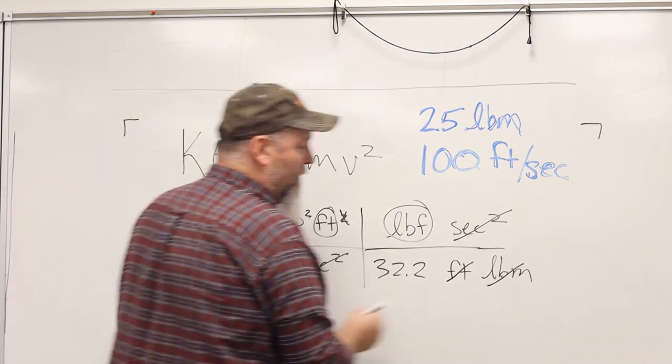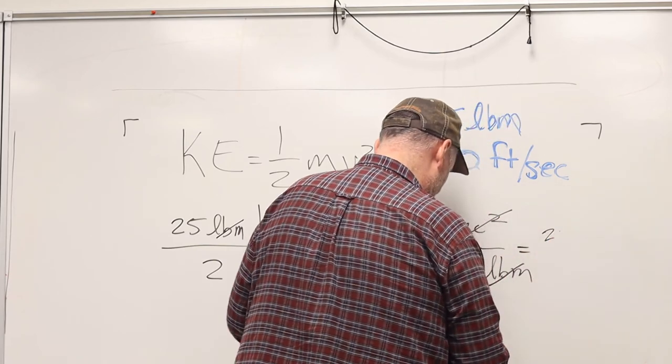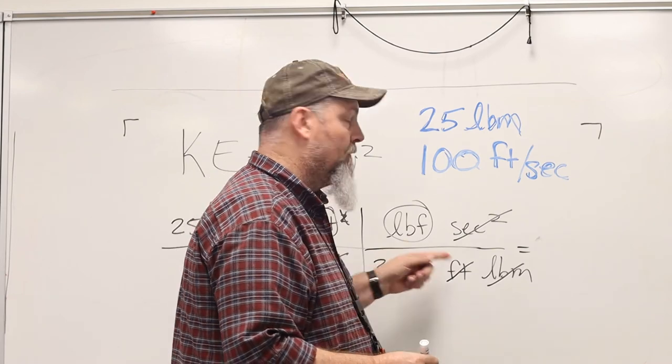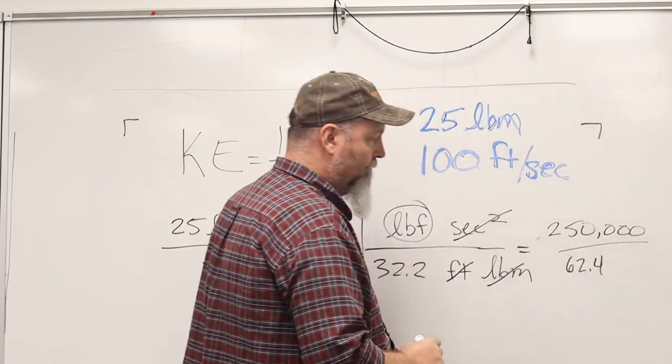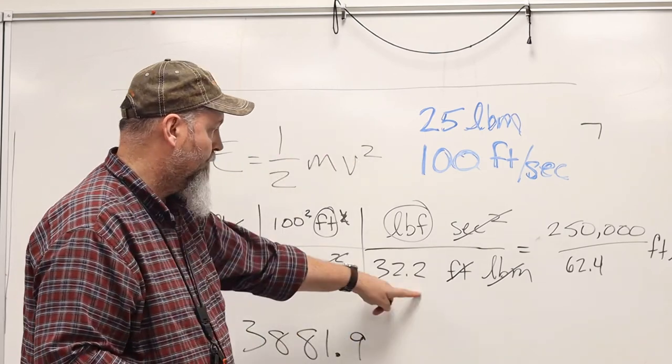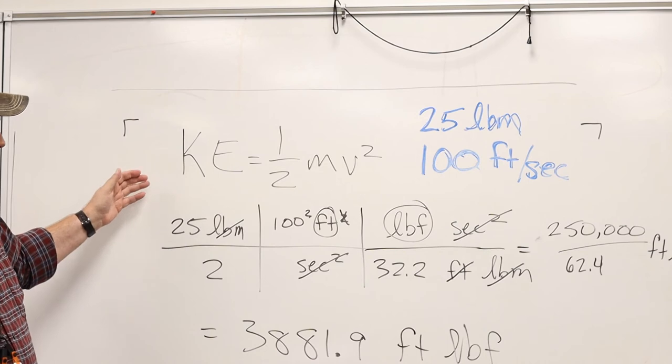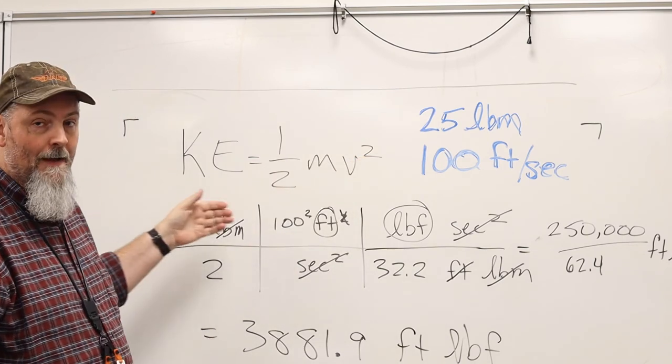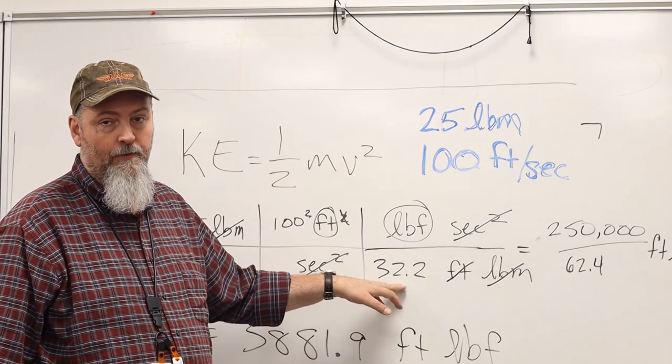And my answer is 3,881.9 foot pounds force. So the kinetic energy of 25 pounds mass of steam moving at 100 feet per second is the 25 pounds mass times the 100 feet per second squared divided by 2 times the gravitational constant.